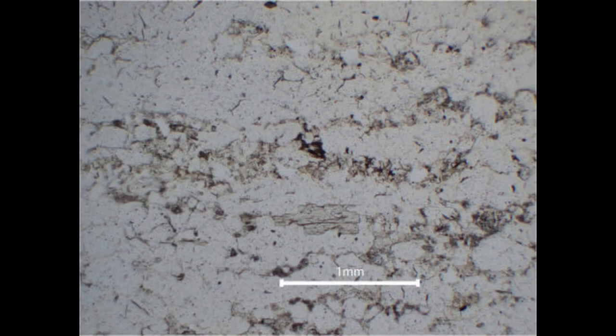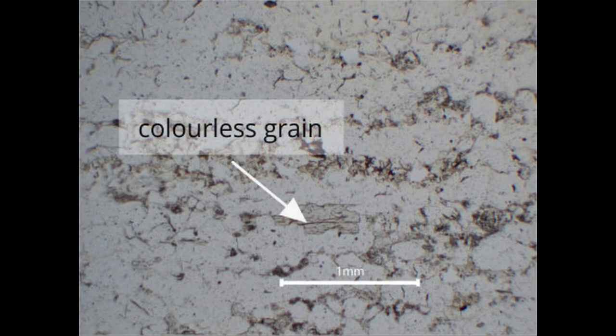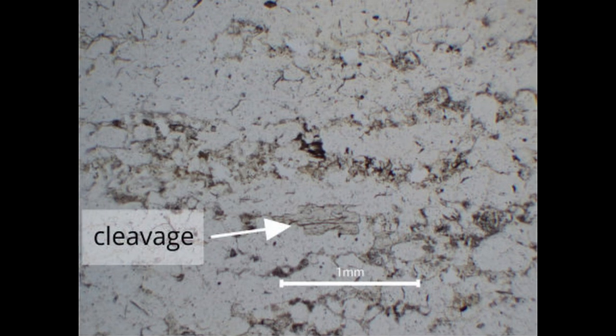A third mineral in the rock is a mineral which, in plain polarised light, forms colourless grains, has moderate relief and shows one cleavage. This mineral is muscovite mica.